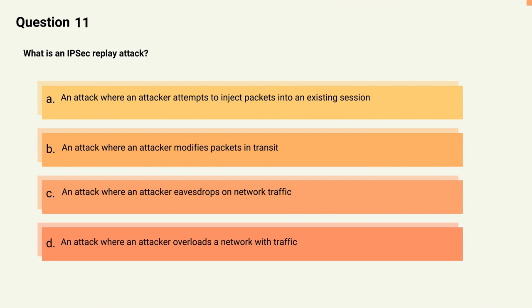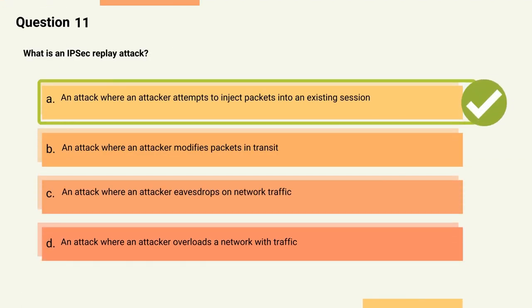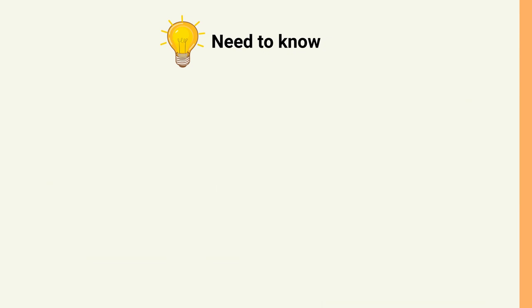Question 11: What is an IPSec replay attack? Options: A) An attack where an attacker attempts to inject packets into an existing session, B) An attack where an attacker modifies packets in transit, C) An attack where an attacker eavesdrops on network traffic, D) An attack where an attacker overloads a network with traffic. The correct answer is Option A. Explanation: In an IPSec replay attack, an attacker intercepts and retransmits packets to try to gain unauthorized access to a network or to disrupt network communication.